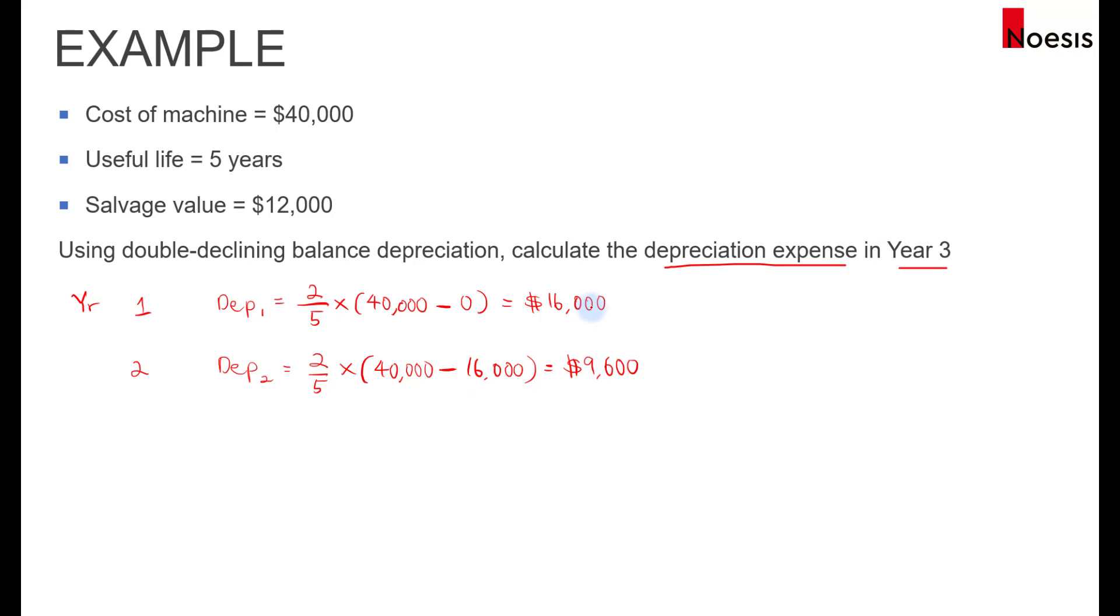So to date, up to year 2, the total depreciation is 16,000 plus 9,600, so that is $25,600. In year 3, if you take the formula 2 over 5, multiply by 40,000, minus 16,000 and minus 9,600, if you continue to use the formula this way, we will get a depreciation expense of $5,760.